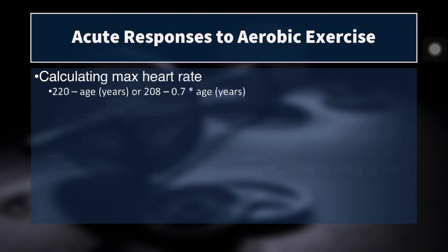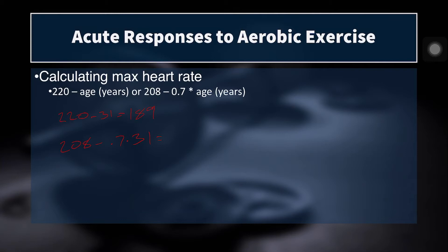Since we're talking about max heart rate, it's important to know how to calculate the estimated max heart rate. The easy way is to take your age and subtract it from 220. So for a 31-year-old, we get an estimated max heart rate of 189. An alternative method based on meta-analysis is to take 208 and subtract your age times 0.7. For that same 31-year-old: 31 times 0.7 equals 21.7, so 208 minus 21.7 gives us 186.3. The second formula may be more accurate for young and healthy individuals, but either way, there is some error in that calculation.